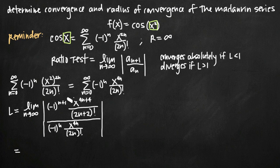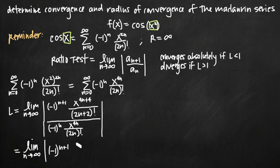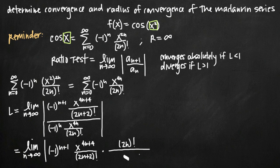Instead of dividing one fraction by another, we multiply the fraction on top by the reciprocal of the fraction on the bottom — that's how we always simplify when using the ratio test. So we get negative 1 to the n+1 times x to the 4n+4, all divided by (2n+2) factorial, multiplied by the reciprocal: 2n factorial in the numerator and negative 1 to the n times x to the 4n in the denominator, taking the absolute value of the whole thing.